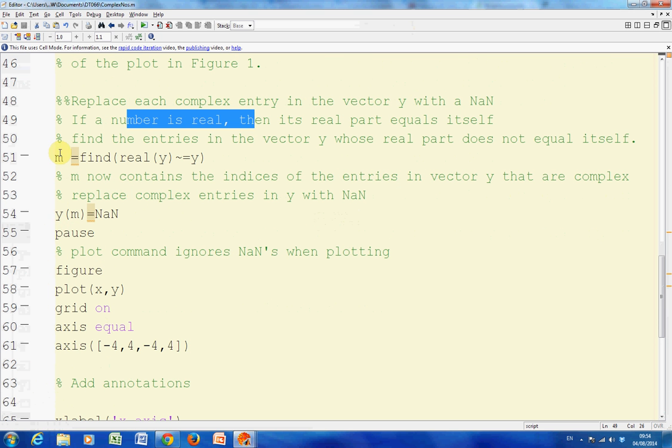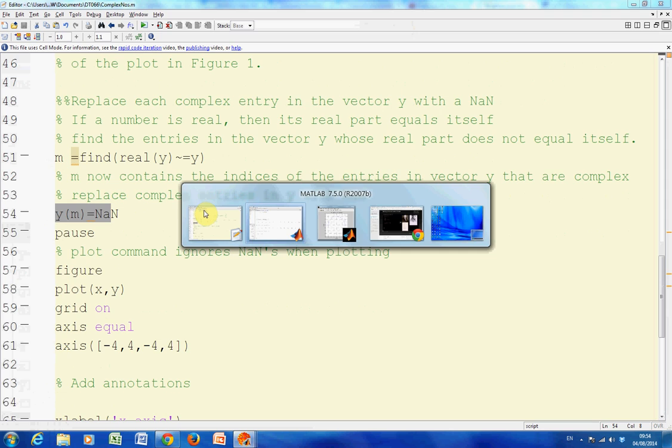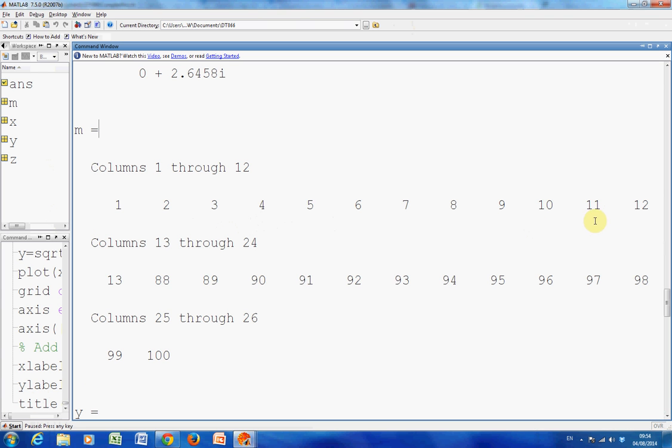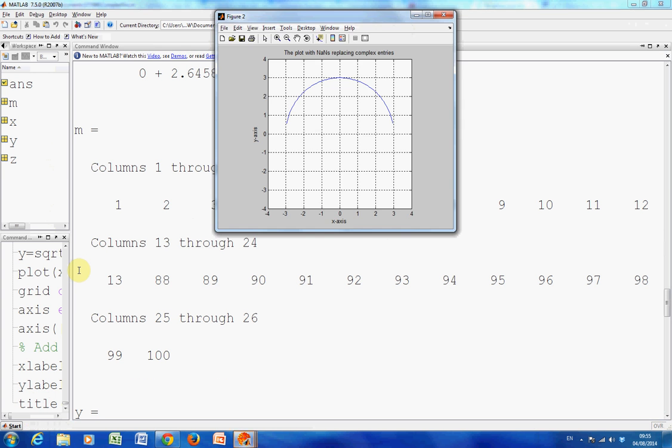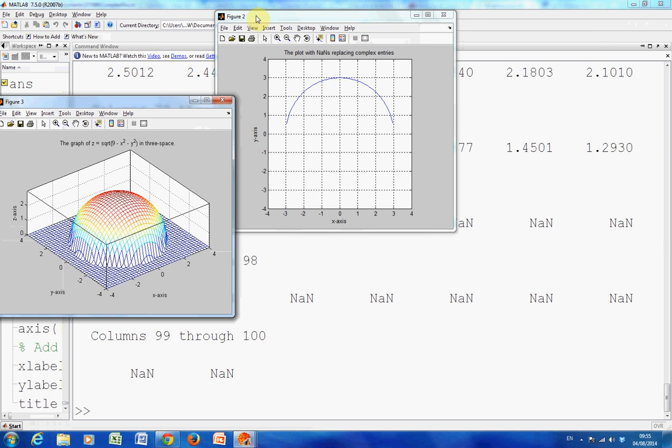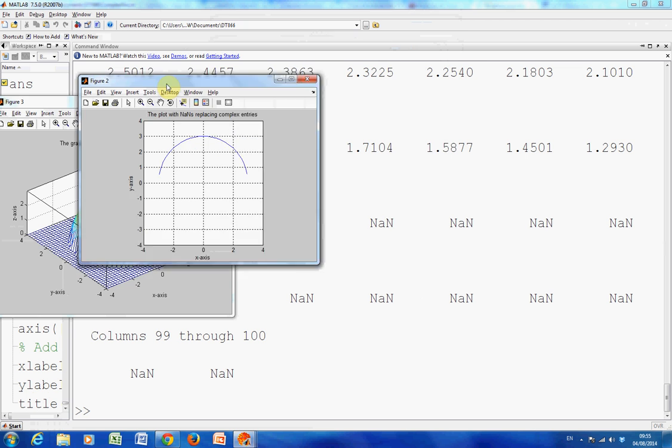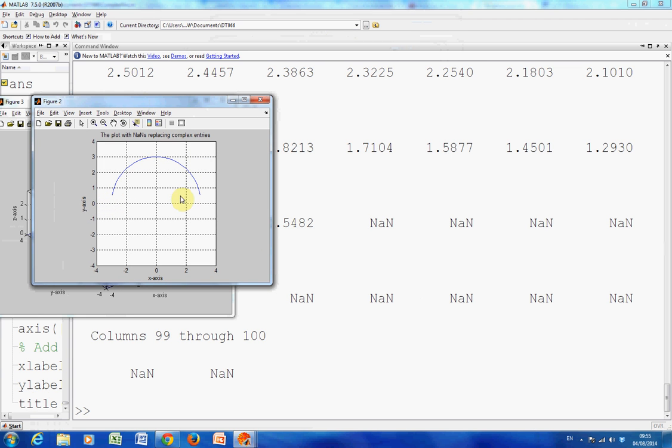M is those numbers, and then we are going to say Y(M), so Y1, Y2, Y3, Y4, Y10, Y11, Y12, Y13, Y88 to Y100 are going to be replaced by NAN. NAN is not a number. And then we are going to plot again. So we've gone from minus 3 to plus 3, and we've ignored the tails at the end. When we have NAN, not a number, we don't get any of these tails out there. We're just plotting the real bits there.